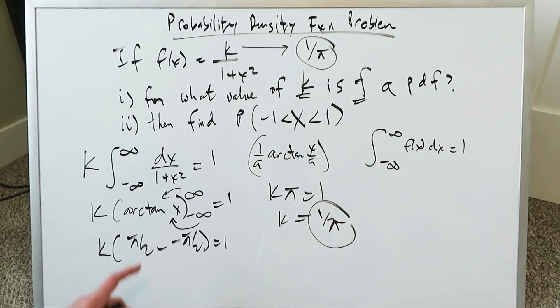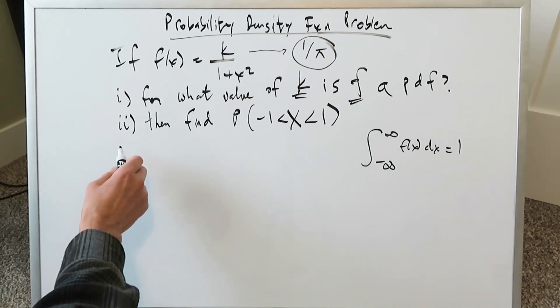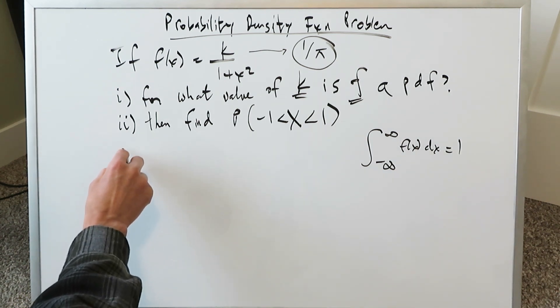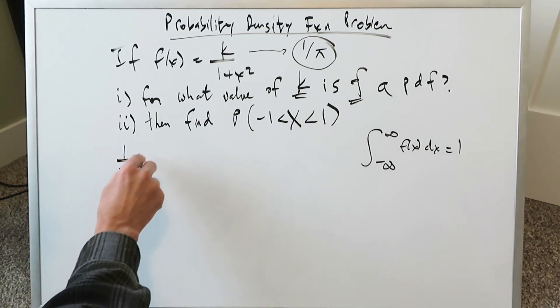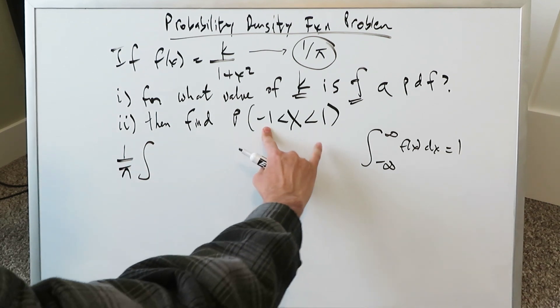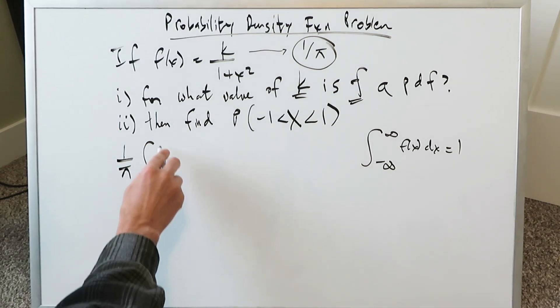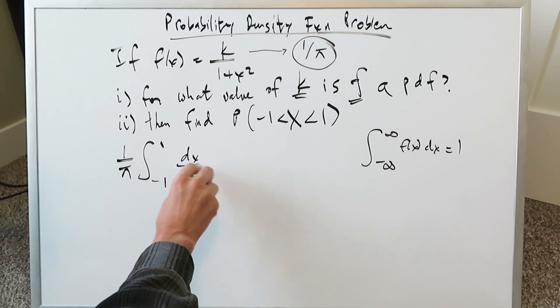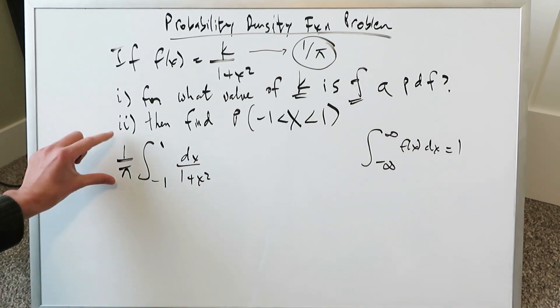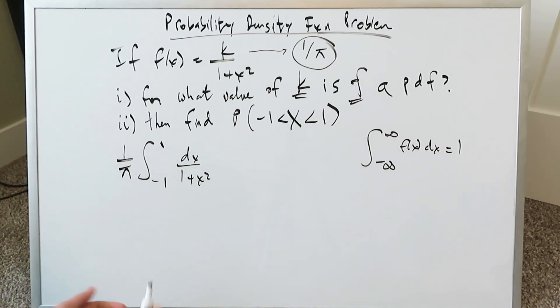When you do this final computation over here, you're having k times pi. This gives you k times pi equals 1, so k equals 1 over pi. And that's exactly the value which will come here into play in the second question. So we've done the first question. 1 over pi is the answer for that. For question number 2, now that we know it's 1 over pi, our function has become, and our integral has become this 1 over pi, we're looking at it now from here. Continuous random variable from minus 1 to 1.